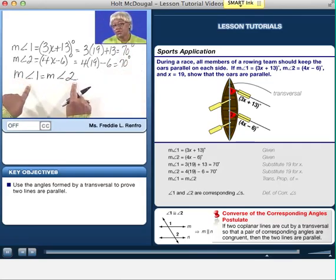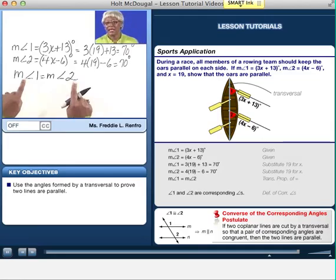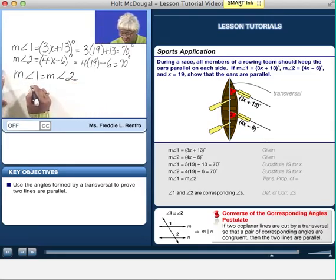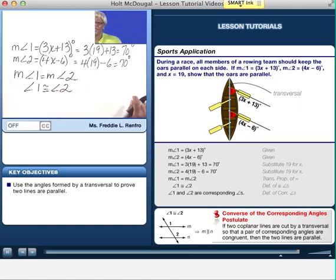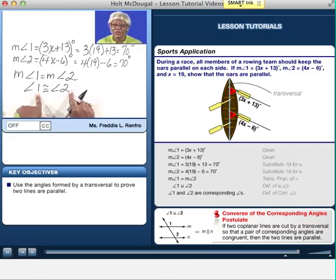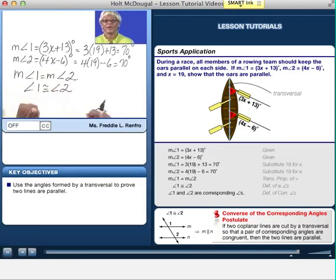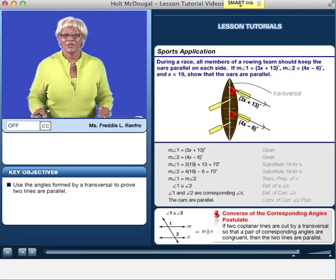If the measures of those two angles are equal, I can now say, using the definition of congruent angles, angle 1 is congruent to angle 2. 1 and 2 are congruent. What can I now say? That those two oars are parallel. And that's what we were trying to show, that the oars were parallel.